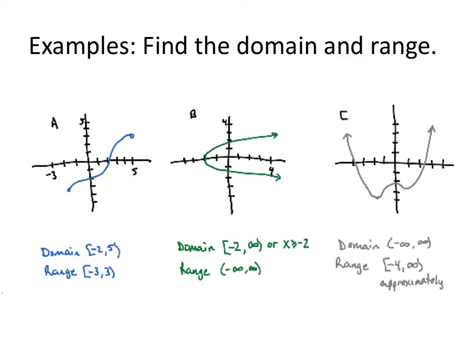For the range, I want to evaluate the y values from bottom to top. As I am coming up the y-axis, it looks like I was trying to hit negative 3, and it looks like it was trying to go all the way up to positive 3. So negative 3 has the bracket. Positive 3 has an open parenthesis because I never actually hit it.